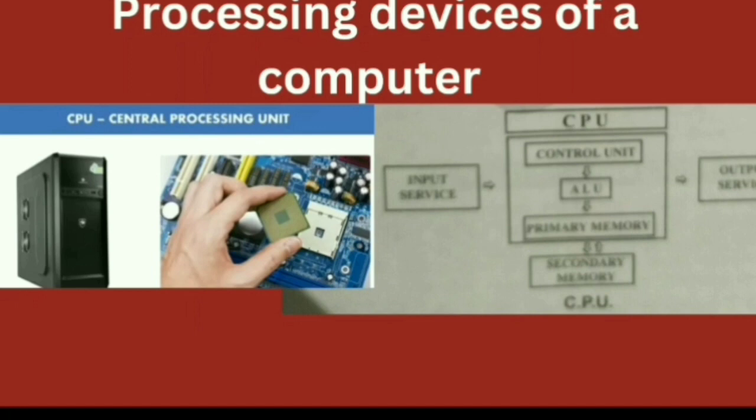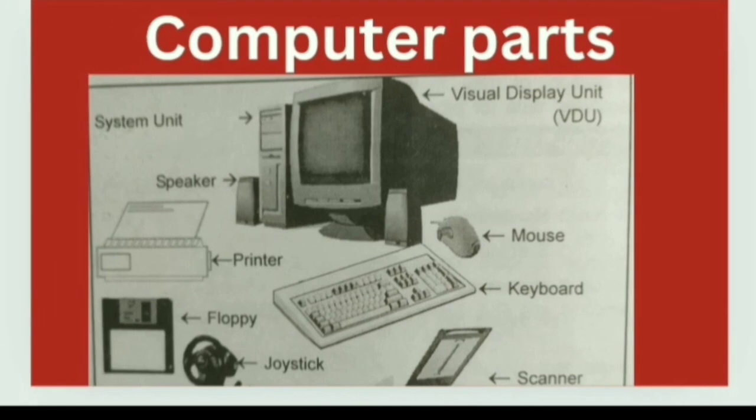Processing device of a computer: CPU, the central processing unit. Functions of a CPU include the control unit, ALU (Arithmetic Logic Unit), primary memory, and memory. These are the functions of a CPU.